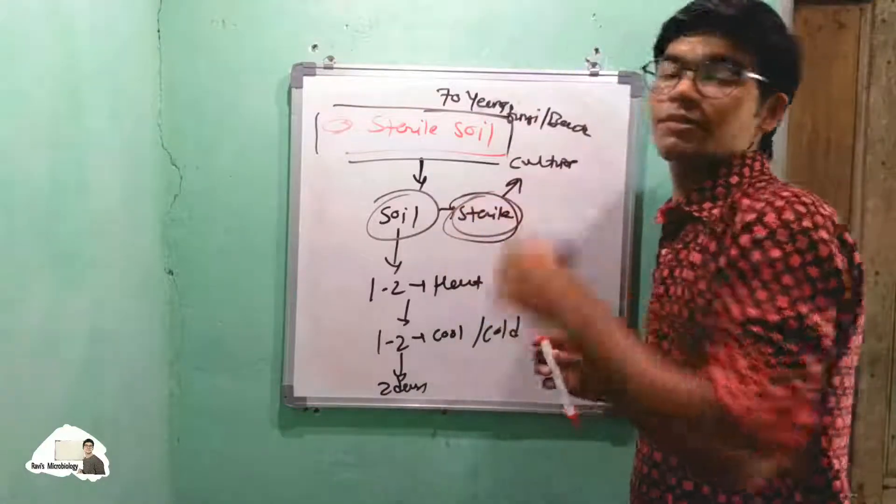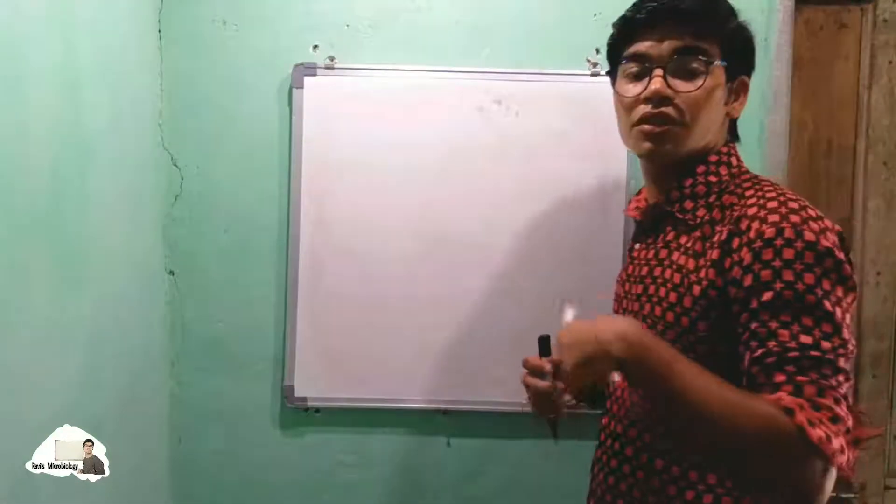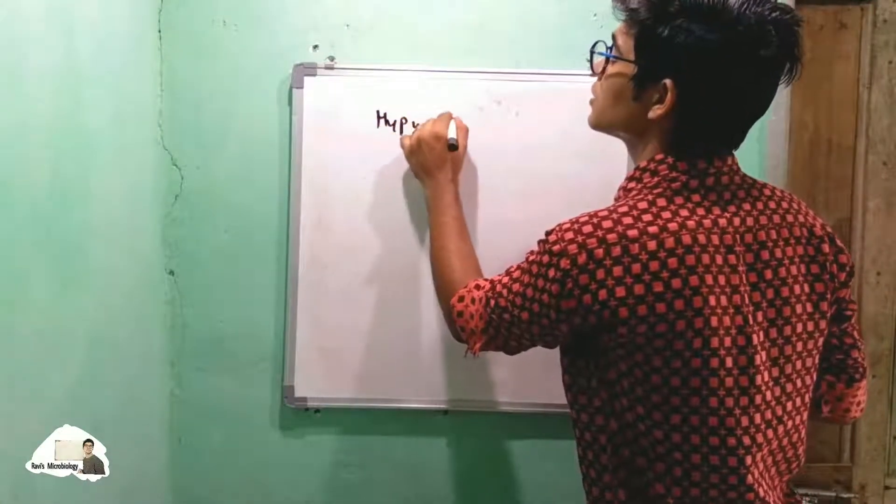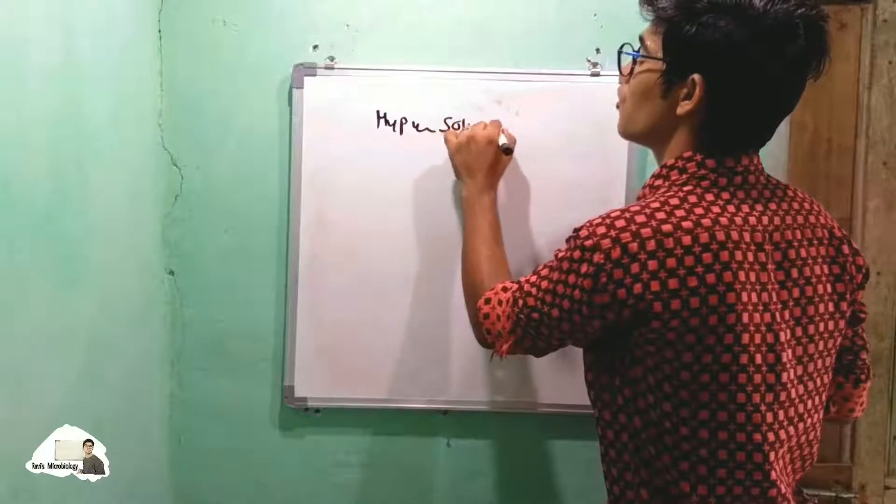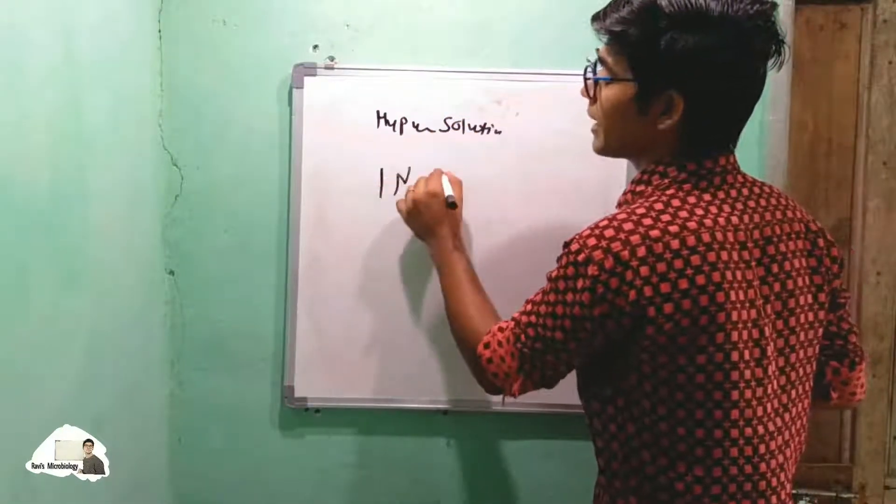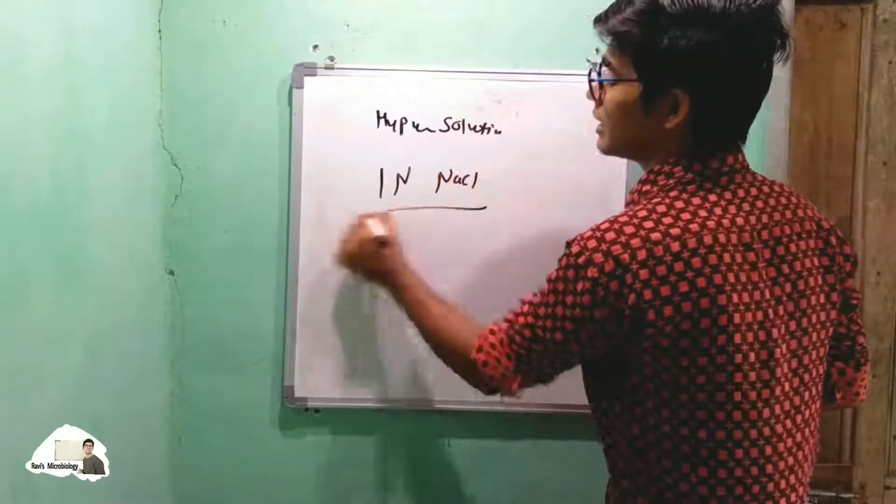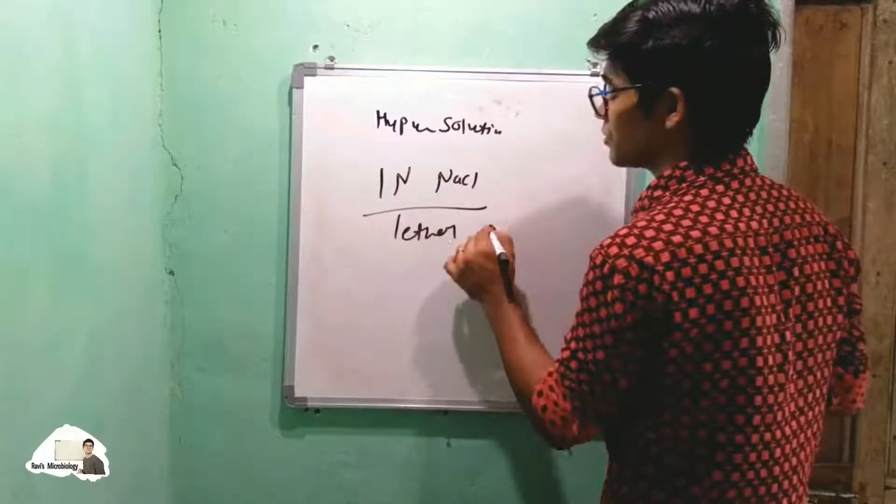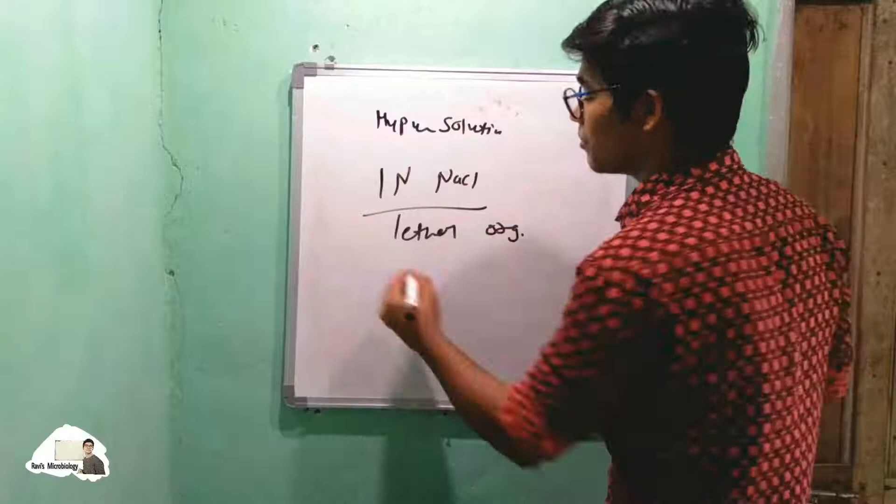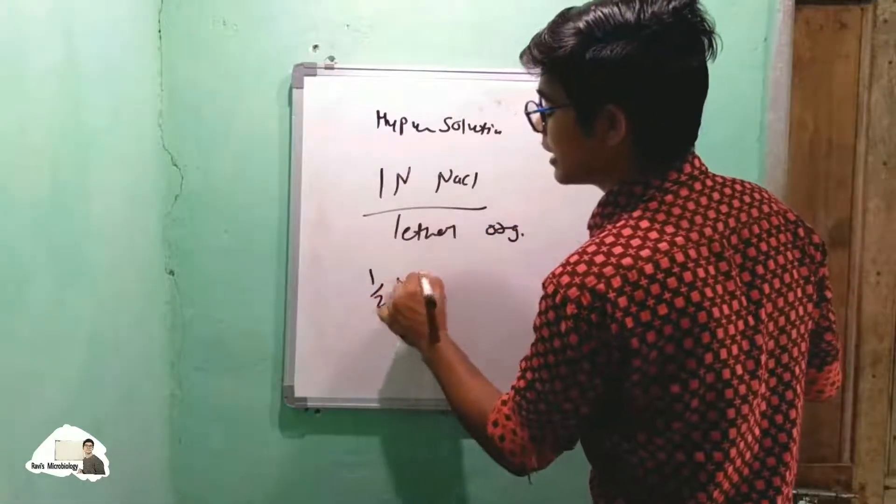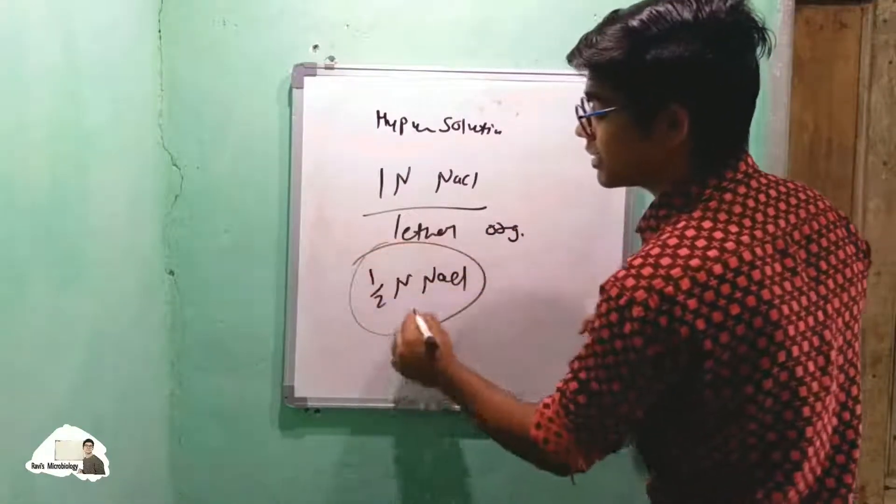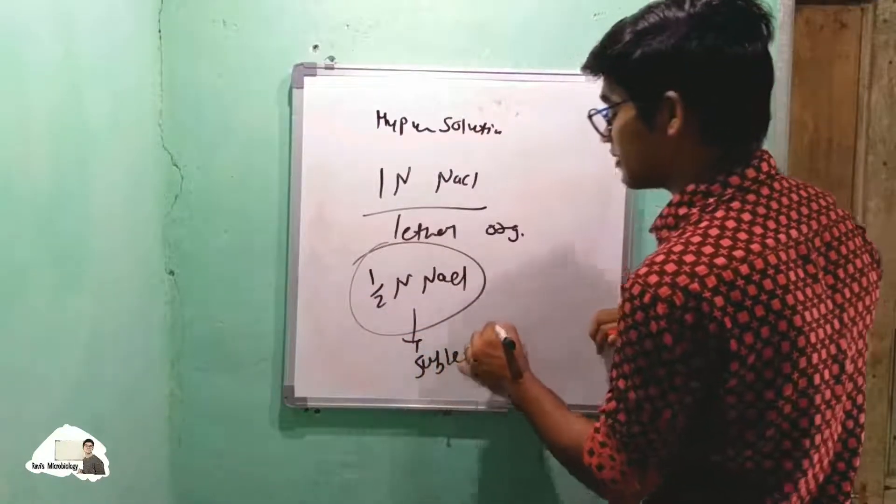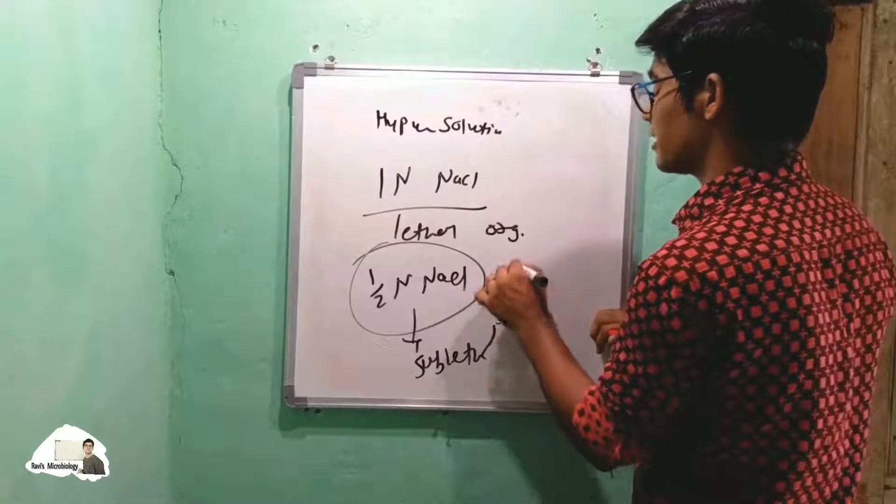The fourth method uses hypertonic solution. We all know that one normal NaCl is lethal for most organisms, but half-normal NaCl is not completely lethal—it is sub-lethal. It prevents growth but not metabolism.